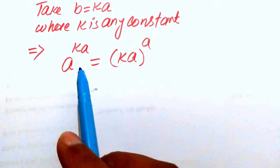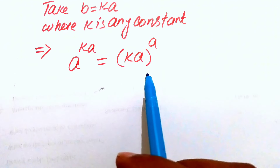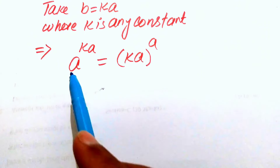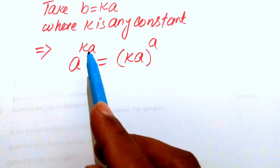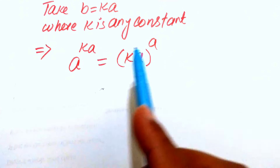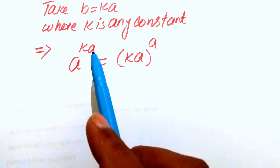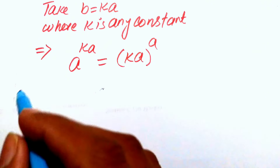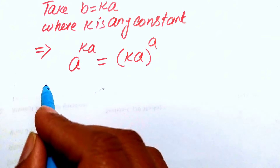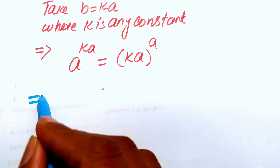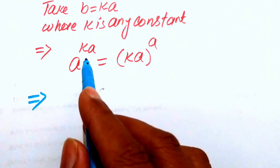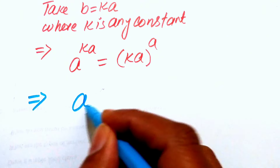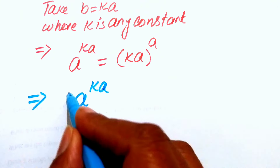We take the power one over a on both sides of this equation in order to eliminate the a in the exponent. So we need to take the a-th root on both sides.